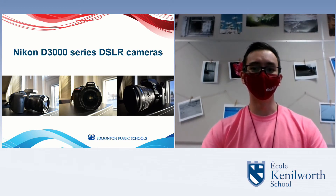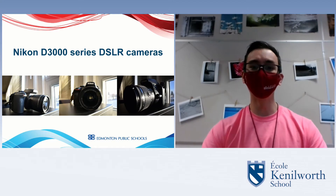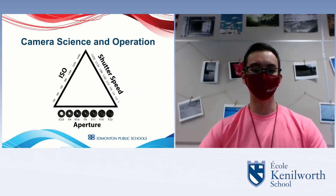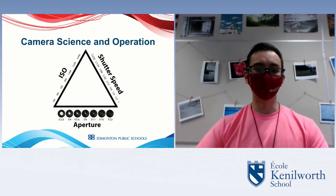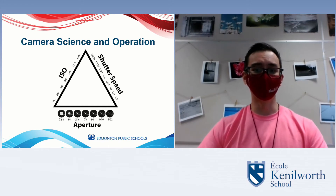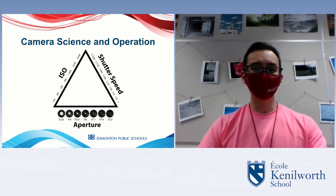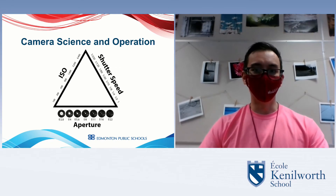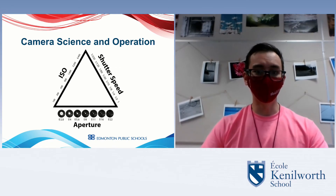Students will learn about the various modes within the camera, such as auto/program mode, aperture priority, and shutter priority. They'll also learn about the science of how a camera works to manipulate ISO, exposure compensation, focus, and focal length to maximize the quality of their photos. These are all essential to operate any DSLR or mirrorless camera, and will help students understand how to get the optimal shot in any given situation.